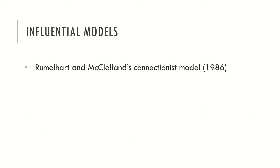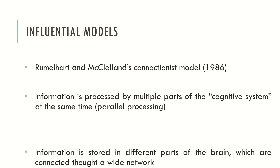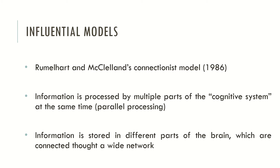Another influential model was proposed by Rumelhart and McClelland. They stated that information is processed by multiple parts of the cognitive system at the same time. This model states that information may be processed in multiple parts of the brain — multiple parts of the cognitive system — in a parallel fashion. The information is stored in different parts of the brain, which are connected through a wide network of neurons.